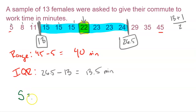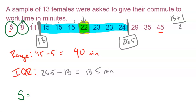For standard deviation, you would first calculate the mean by adding all values together and dividing by 13. Then for each value you subtract the mean and square that result — all the way from 5 up to 45. You add up all those squared values, divide by n minus 1 (which is 12), and take the square root to get the standard deviation. But again, you would never be asked to do that by hand — we'll cover how to do it on a calculator in another video.